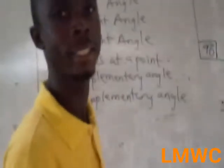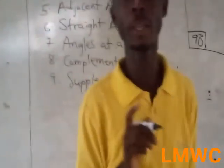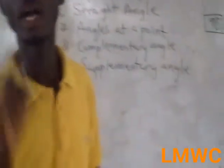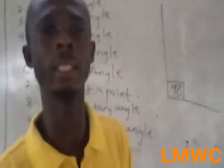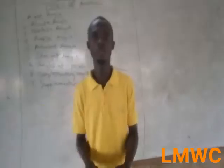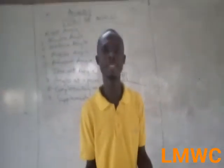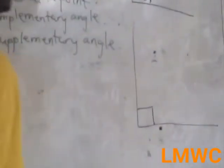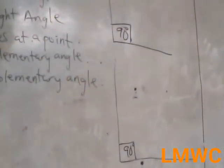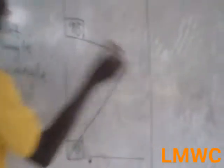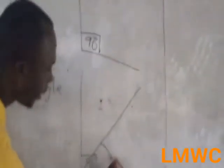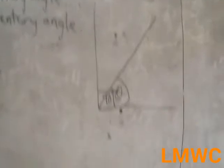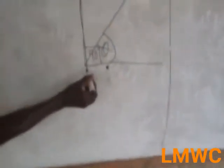Acute angle is an angle less than 90 degrees. I always start from right angle when teaching angles, because once you know right angle, you will know acute angle and obtuse angle more easily. I use the right angle to illustrate — we have 90 degrees here, and if we draw a line within it, this angle is an acute angle because it is less than 90 degrees.